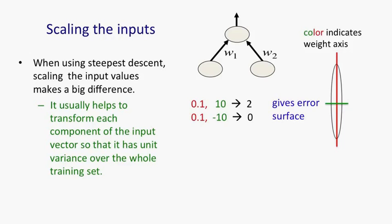If we simply change the variance of the inputs, just rescale them, make the first component 10 times as big and the second component 10 times as small, we now get a nice circular error surface.